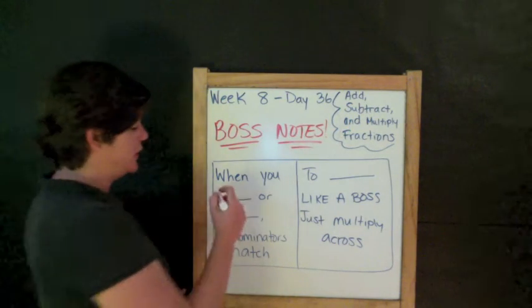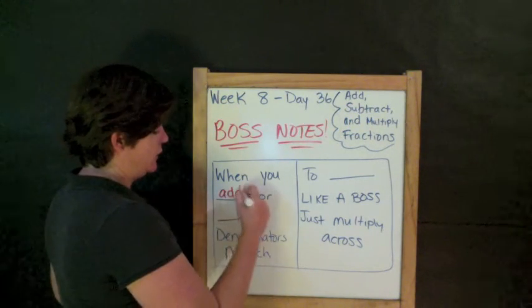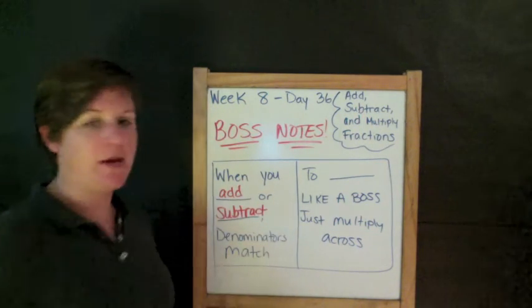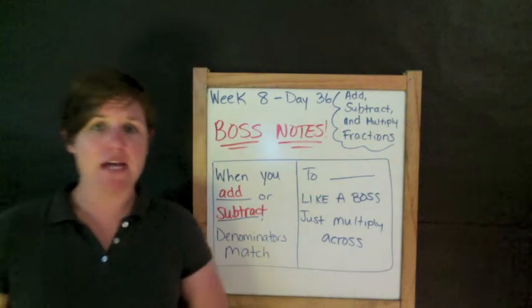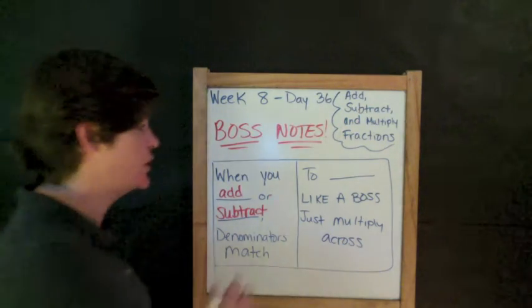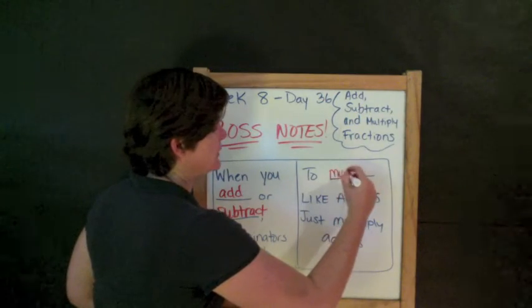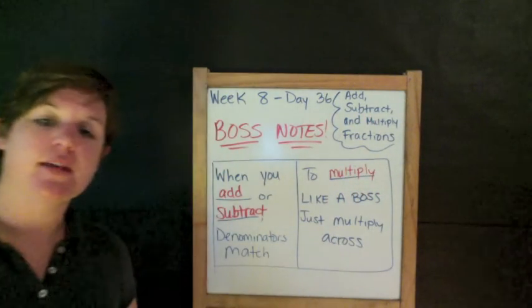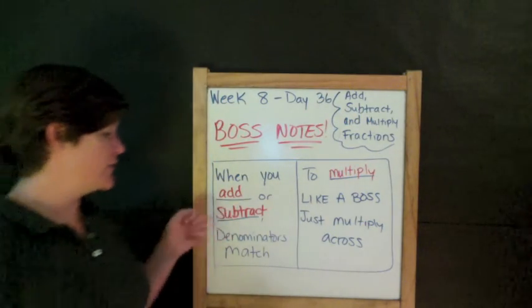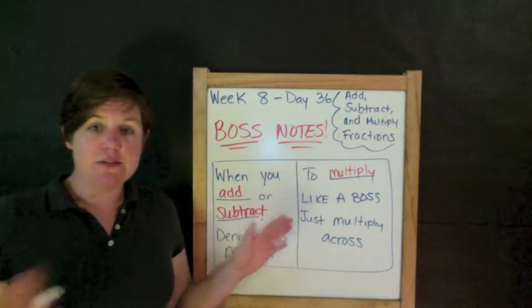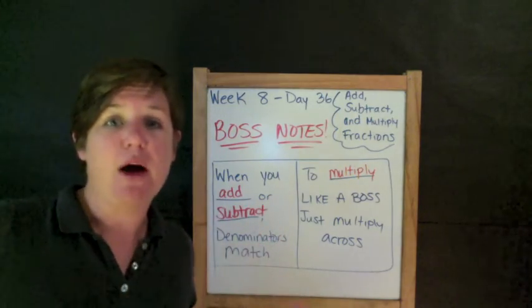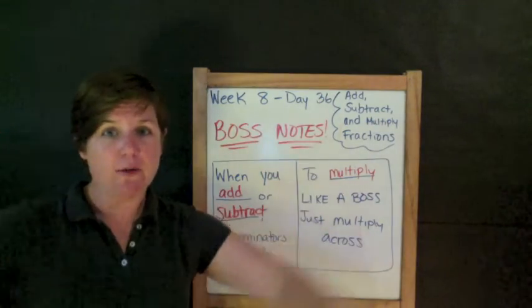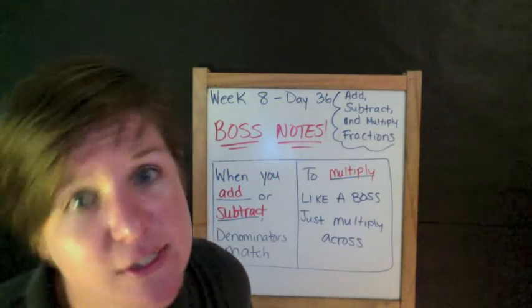When you add or subtract fractions, your denominators match. When you add or subtract, denominators match. To multiply fractions like a boss, just multiply across. When you add or subtract, denominators match. To multiply like a boss, just multiply across. I'll show you what I'm talking about in our Learn It and Practice It sections. Let's go.